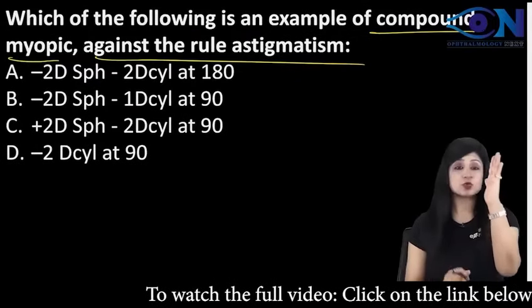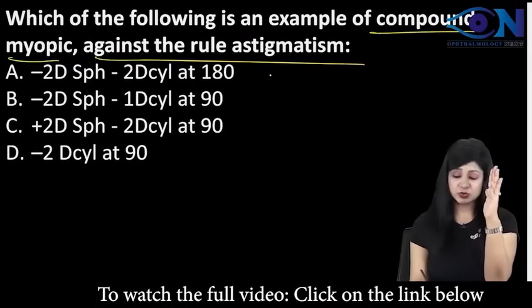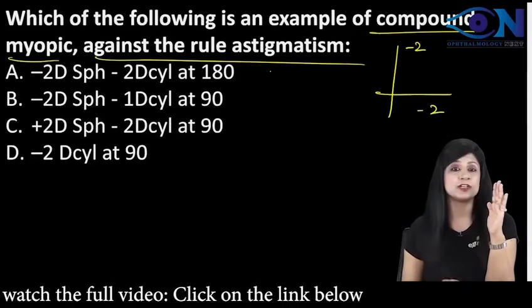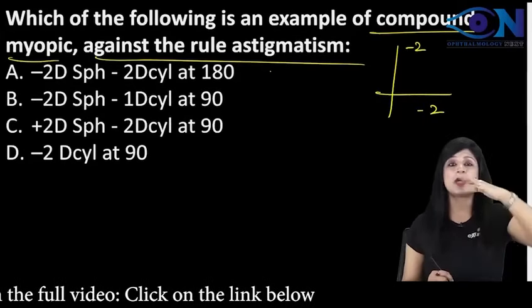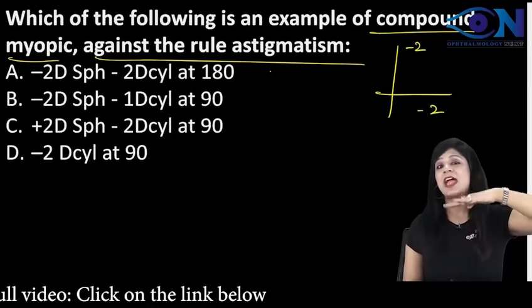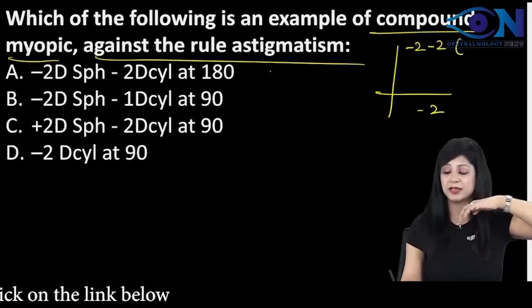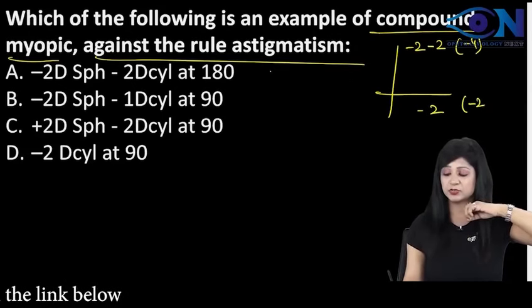Number 1: minus 2 diopter spherical. So minus 2 will be acting at the vertical also and minus 2 in the horizontal also and minus 2 at 180. So if I am giving at horizontal plane it will add vertically and now this becomes minus 4 and minus 2.